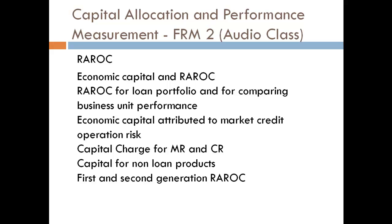It is cost-prohibitive for a financial institution to operate at a 100% confidence level because without taking risk we cannot get any reward — it is about optimization. The amount of regulatory capital required is determined by regulatory guidelines designed to assure sufficient capital in the banking system. Economic capital held by most financial institutions typically exceeds regulatory capital requirements, and the allocation of economic capital among business lines has a profound effect on business and overall performance.